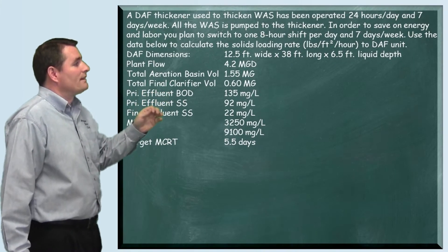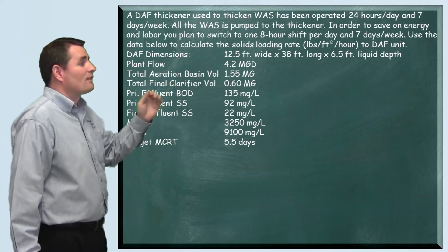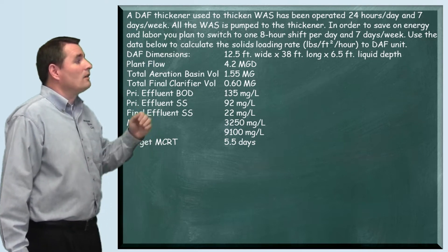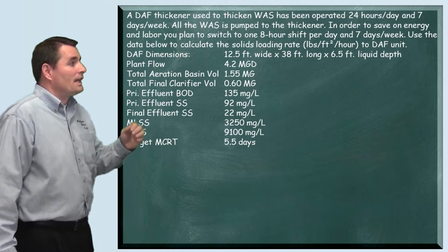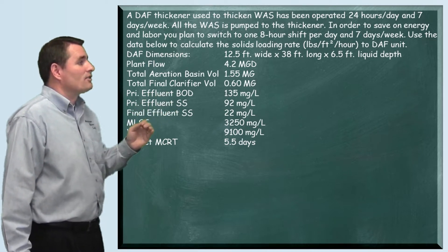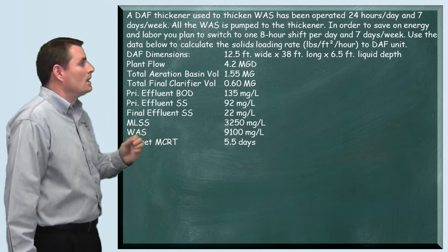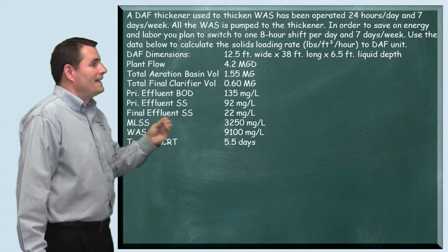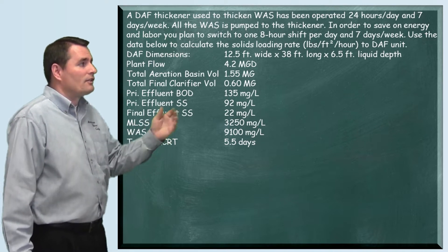The problem reads: a DAF thickener used to thicken waste activated sludge has been operated 24 hours a day, seven days a week. All of the waste activated sludge is pumped to the thickener. In order to save energy and labor, you plan to switch to one eight-hour shift per day, seven days a week. Use the data below to calculate the solids loading rate in pounds per square foot per hour to the DAF unit.